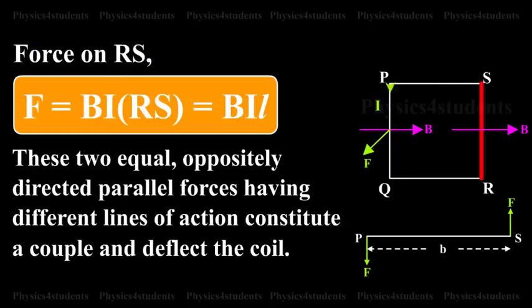Force on RS: F equals BIL. This force is normal to the plane of the coil and acts inwards.